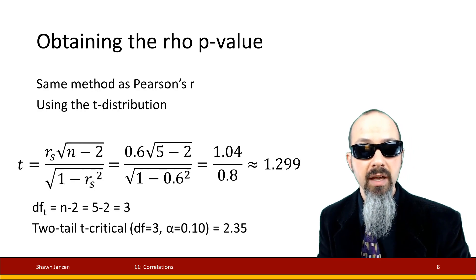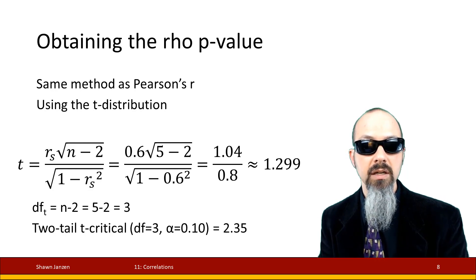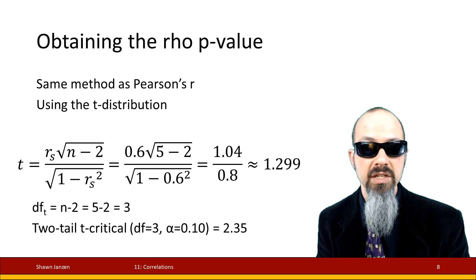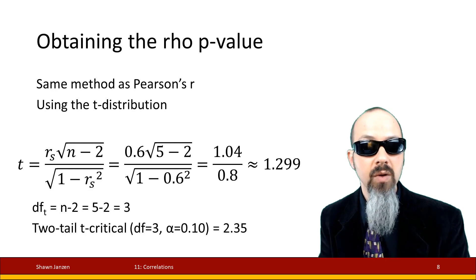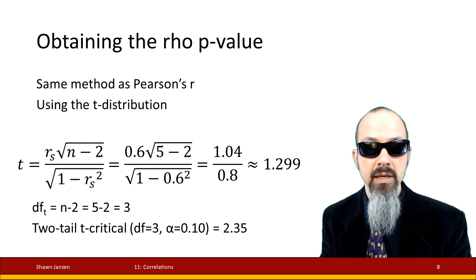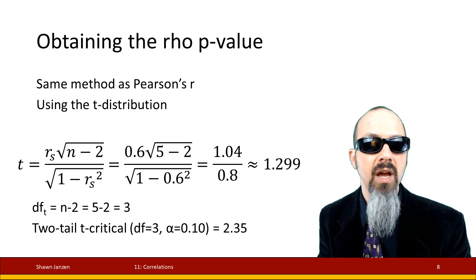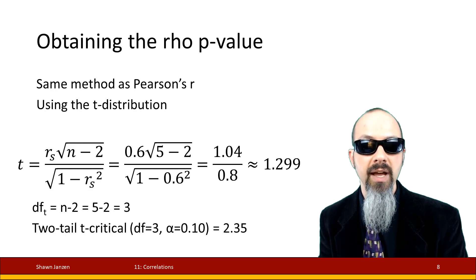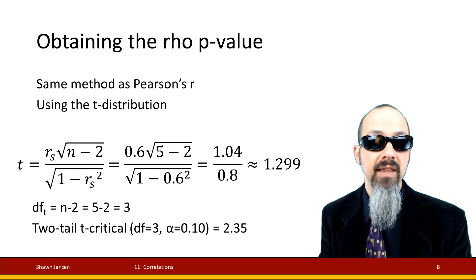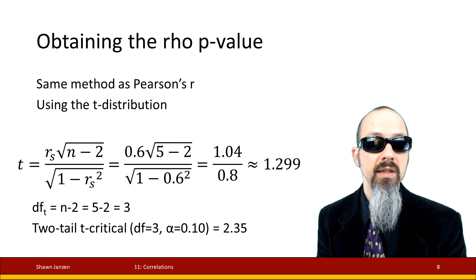If I want to get a p-value for this, it follows a t-distribution — the same function used to get Pearson's r, just using the Spearman's value instead. I plug in the 0.6 correlation with 5 observations for n, and it tells me I have a t-score of approximately 1.3 with 3 degrees of freedom (n minus 2). I have a t-critical value of 2.35, assuming alpha of 0.10. My t-obtained of 1.3 is not larger than t-critical of 2.35, so at that alpha I would not be statistically significant.